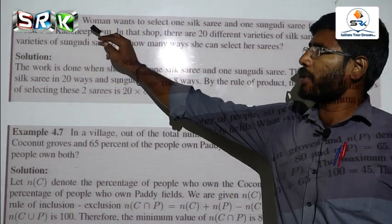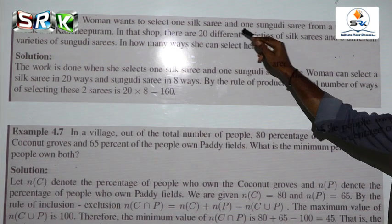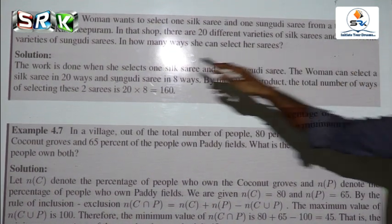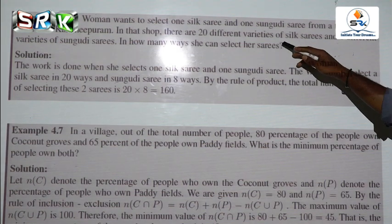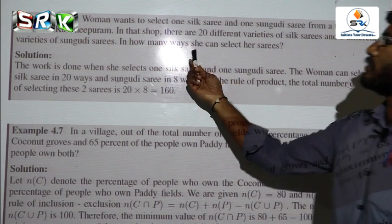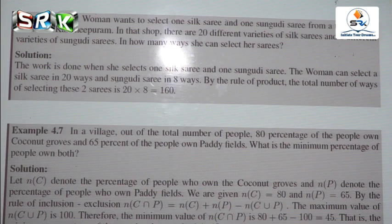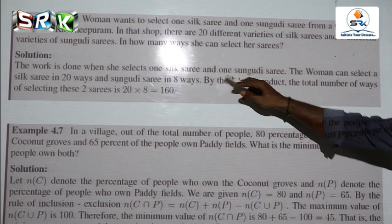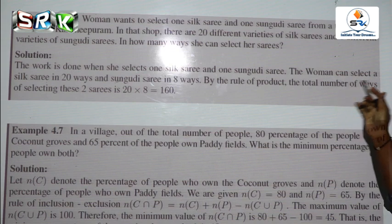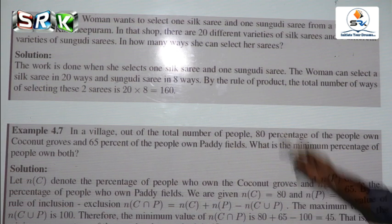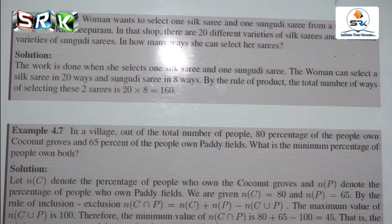Problem 4.6: A woman wants to select one silk saree and one Kanjivaram saree from a textile shop. There are 20 different varieties of silk sarees and 8 different varieties of Kanjivaram sarees. By the product rule, total number of ways = 20 × 8 = 160 ways.